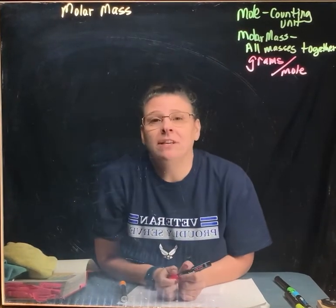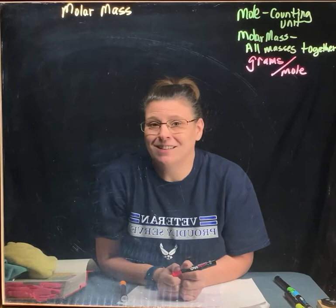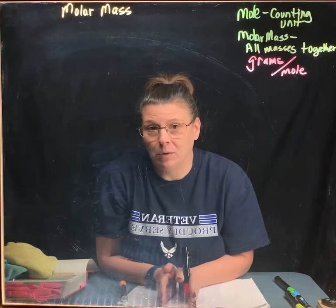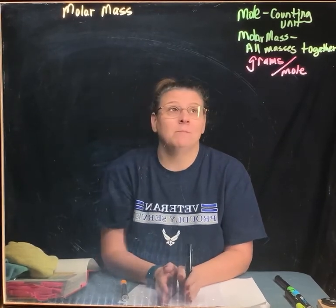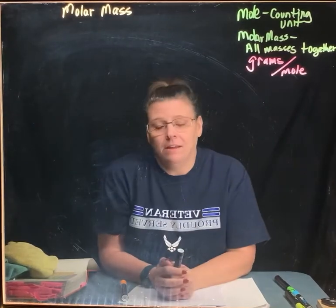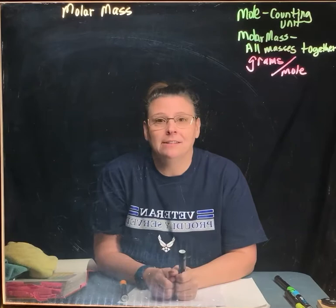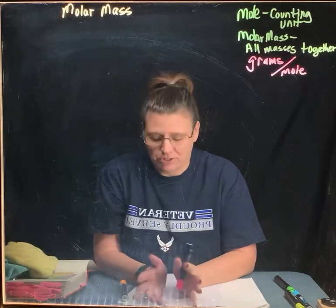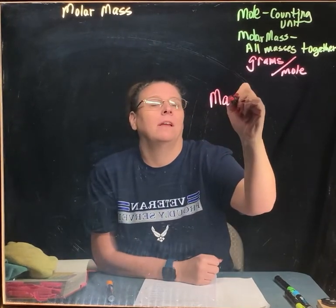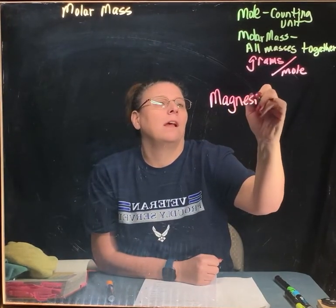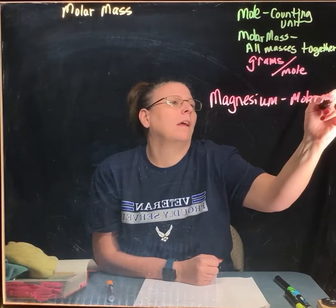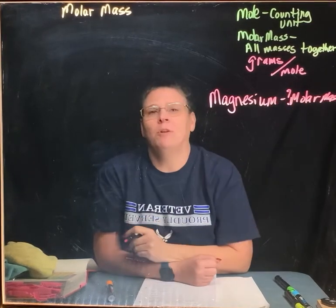All right, you have moles. It is a counting unit in chemistry, kind of like a dozen is for eggs. It has a specific number. We'll talk about that in a later video. What I want you to know about today is molar mass. Molar mass is all the masses of the elements basically added together, but how do we do that? There's a procedure.